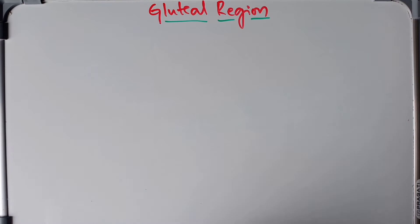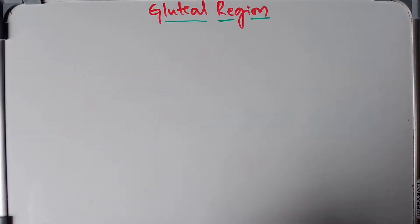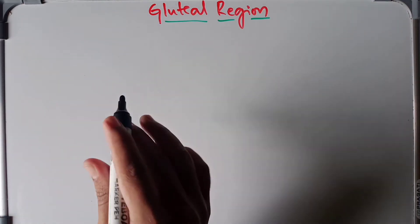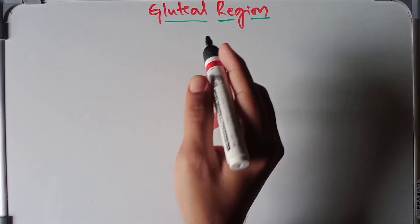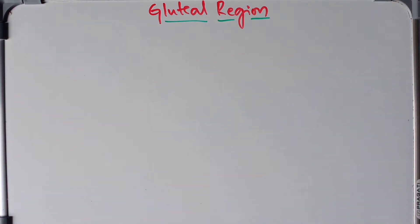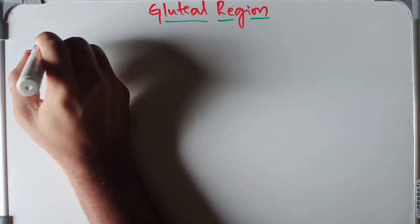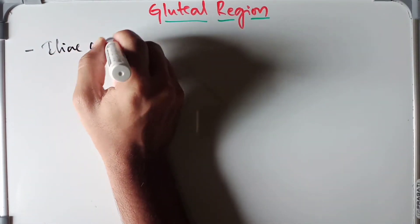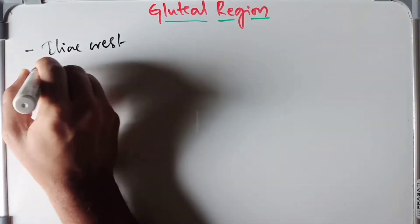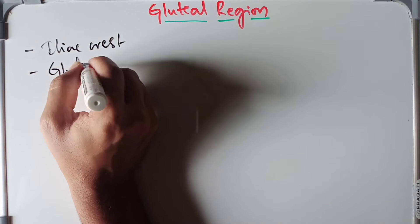Today we are going to look at the anatomy of the gluteal region. This will be just an introduction about its extension and surface landmarks. The gluteal region extends from the iliac crest superiorly up to the gluteal fold inferiorly.